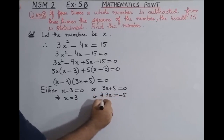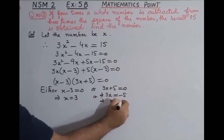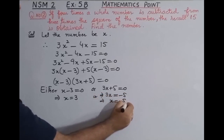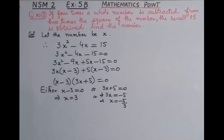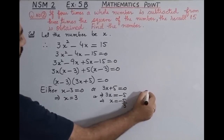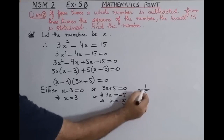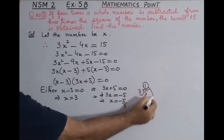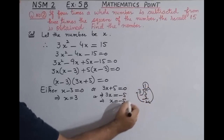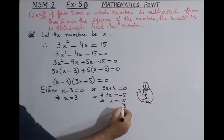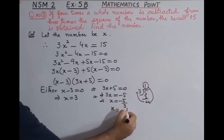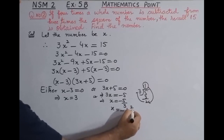From 3x = -5, dividing both sides by 3: x = -5/3. If you divide 5 by 3, 3 ones are 3, 5 minus 3 is 2, so x = -1 and 2/3, that is x = -1⅔.